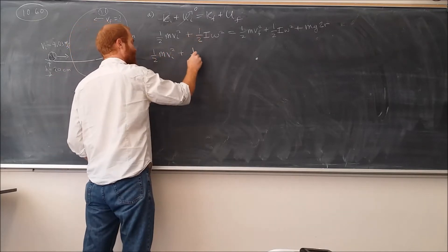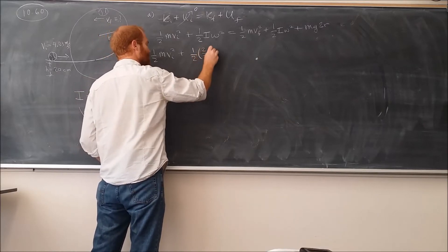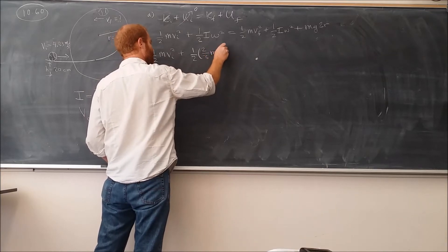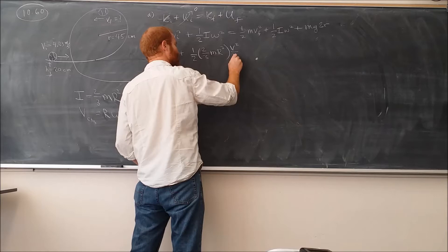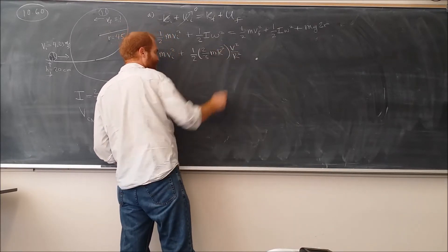We have the 1/2 times I, which is 2/3. And omega is V squared over R squared now. U squared at least. Causing that and that to cancel.